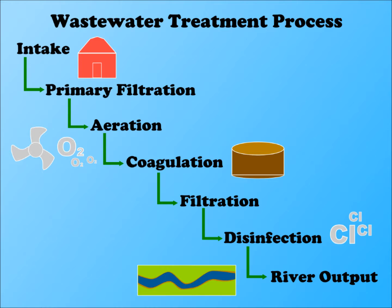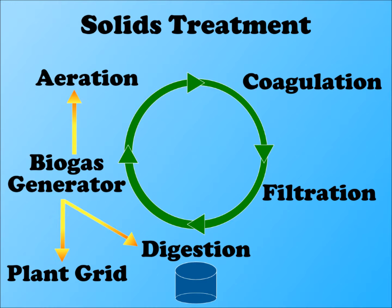Pumping throughout the entire process is a major draw of energy. The sludge from the filtration process is an energy-rich organic matter that becomes the fuel source for anaerobic digestion, which converts it to biogas. The biogas generator uses combustion to create electricity, which is sent to the aeration phase and towards the entire plant grid. Excess heat from the combustion process feeds back into the digester for maximum efficiency.